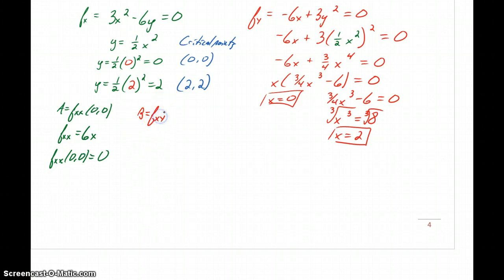B is going to be equal to the second derivative with respect to y evaluated at 0, 0. So if we take the second derivative of this function, the first derivative now taking the second derivative with respect to y, we'll get negative 6 with no variables left over, so nothing to substitute. And then if we calculate c as the second derivative with respect to y, we'll get f sub yy is equal to 6y. So evaluating that function at 0, 0 gives us a value of 0.